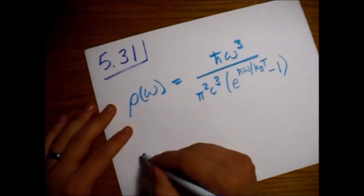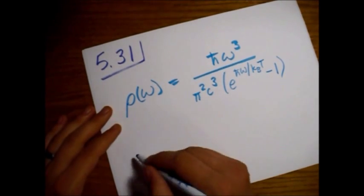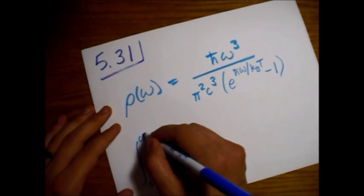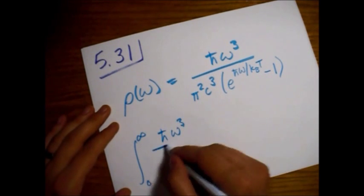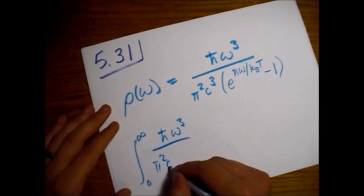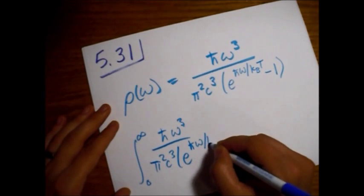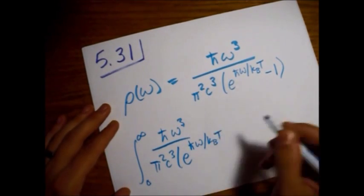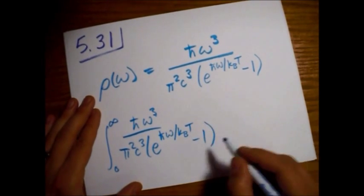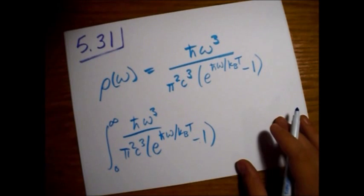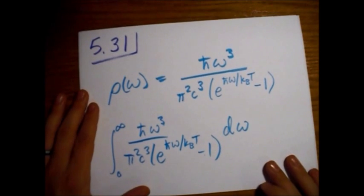All right, so here we go. So the total energy density, right? Zero to infinity of this thing, h bar omega cubed, pi squared c cubed, e to the h bar omega over kBT. You can see how our chemical potential is zero for photons. Minus sign here is the bosons, and we're integrating over the frequencies here.